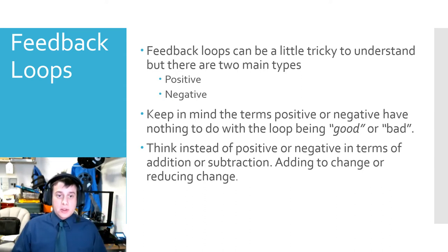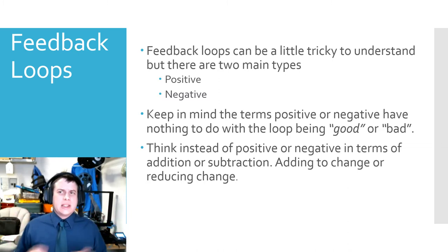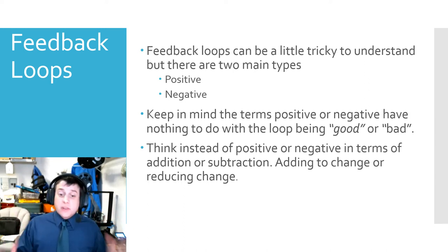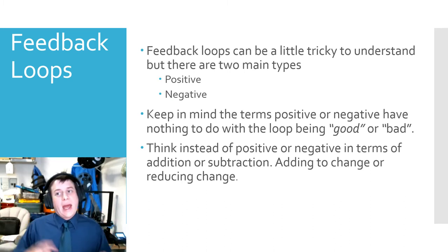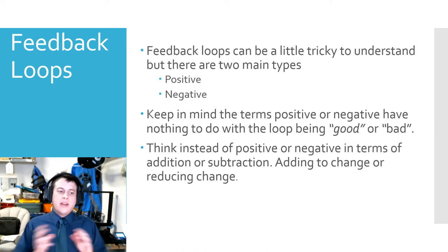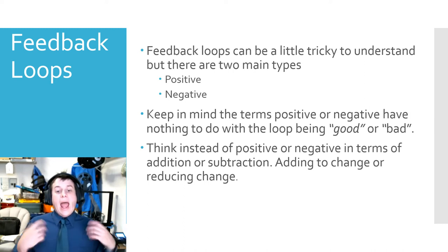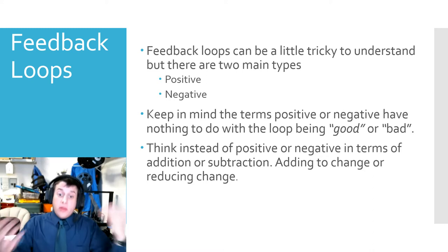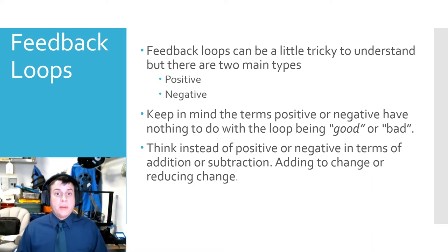There are two main types, but what you need to keep in mind — and this is what trips people up sometimes — is when we say it's a positive feedback loop, that doesn't mean that it's good. If we say a negative feedback loop, it doesn't mean that it's bad. It's not about good or bad. These are just two ways in which change in a system is expressed. Instead, think of positive and negative in terms of addition or subtracting — adding to a change or reducing the total change. That's really what we're talking about when we say positive or negative feedback loop.